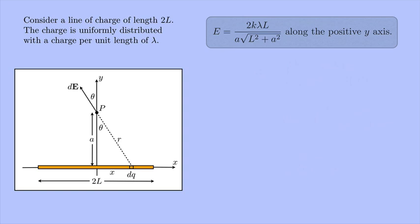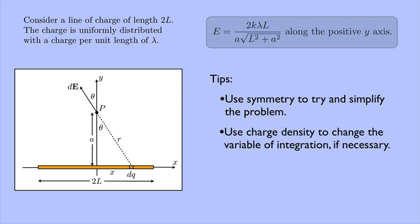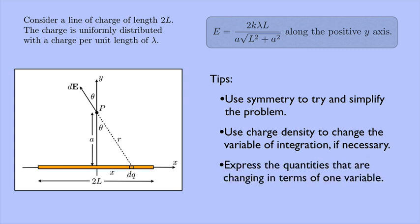So some things to remember. I know this seemed like there were a lot of steps here, and maybe it wasn't completely obvious what the next step was. Well, the overriding goal is to get the integral in terms of just one variable and in terms of something that you can integrate. And that may not be obvious right from the start, but you just have to try stuff out. So some hints I can give would be make sure you use symmetry to try and simplify the problem, and use the charge density to change the variable of integration if you need to. Finally, ask yourself what's staying the same and what's changing. And remember that the things that stay the same can just be pulled outside the integral, but the things that are changing all need to be expressed in terms of one variable. I know these problems can seem tricky when you first see them, but trust me if you work a few of them out you'll start to see some patterns, and it won't seem so mysterious.